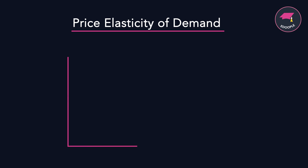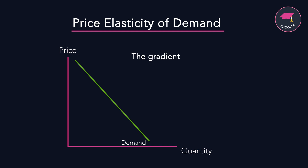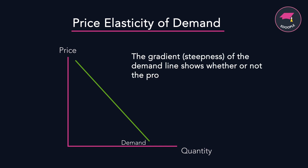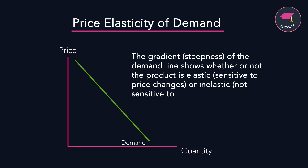If we look at price elasticity of demand on the standard demand diagram, we'll see that price elasticity varies depending on the steepness of the line. If it's very steep the product will be inelastic; if it's very shallow it will be elastic. A nice way to remember this is that inelastic looks like an I and elastic looks like an E, as shown on the graph.